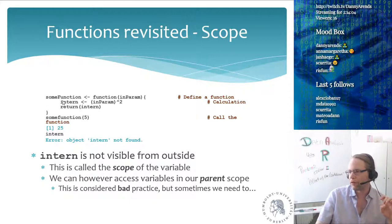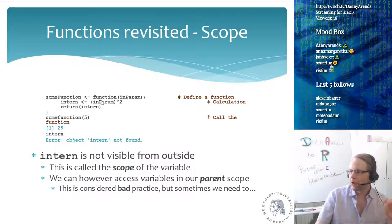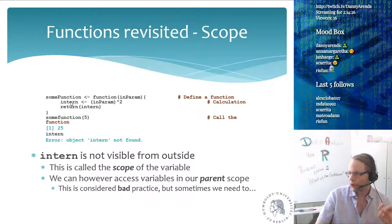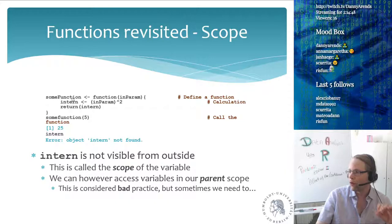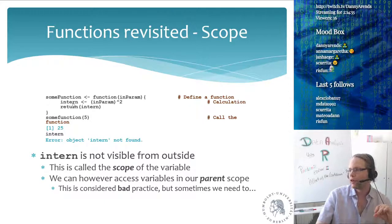We have a variable called some_function, which we assign a function with a single parameter. We take the input parameter `in_param`, raise it to the power of two, store it in the internal variable `intern`, and then return `intern` to the outside world. When we call some_function(5) we get back 25. If we then type `intern` in R, it gives an error — 'object intern not found' — because intern only exists while the function is executing. This is the scope of the variable.